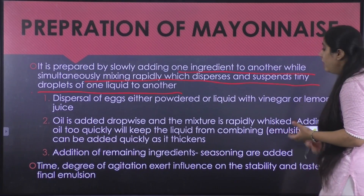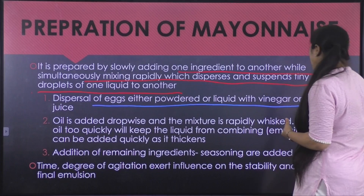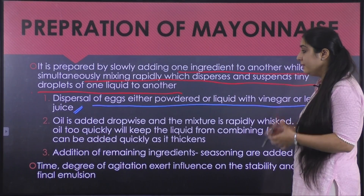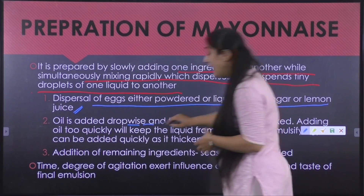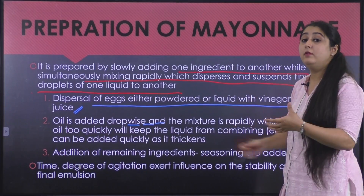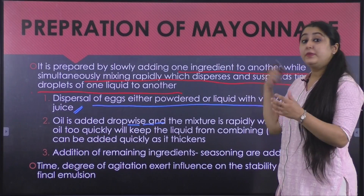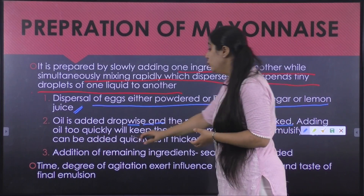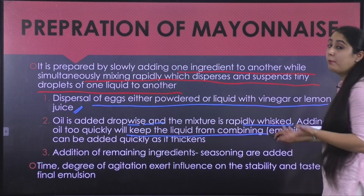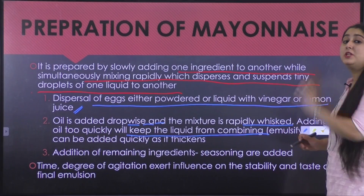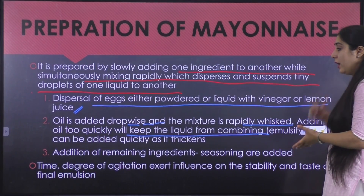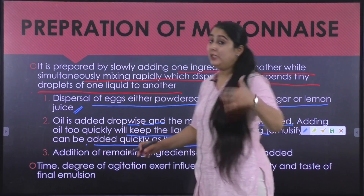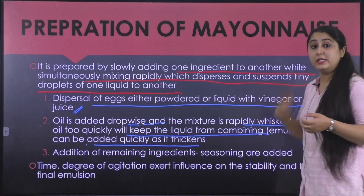First we disperse eggs — either powdered or liquid — with vinegar or lemon juice. Then oil is added drop-wise with continuous stirring. If we add oil too quickly, emulsification will not occur. However, once the initial emulsion and texture of the mayonnaise has been attained, we can add oil somewhat more quickly as it thickens. But initially it must be added drop-wise with continuous mixing.